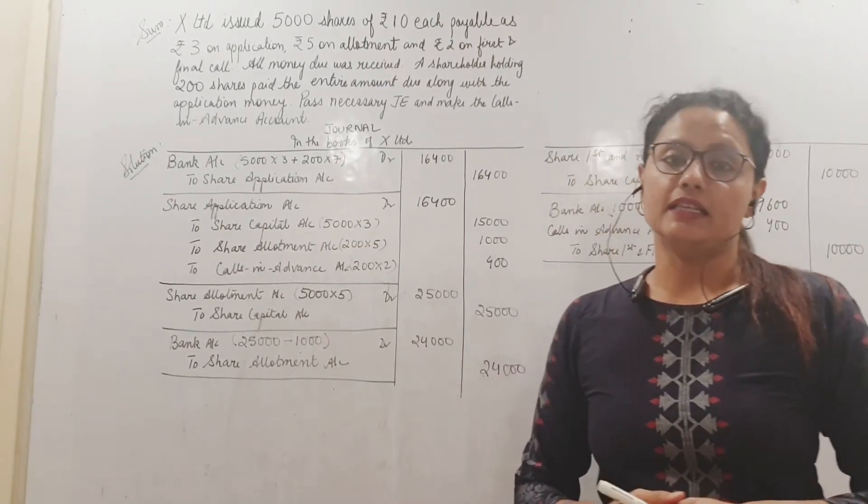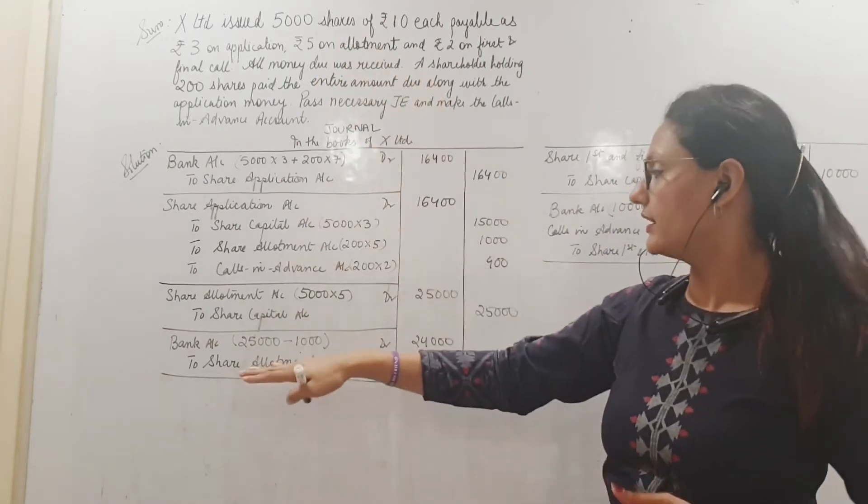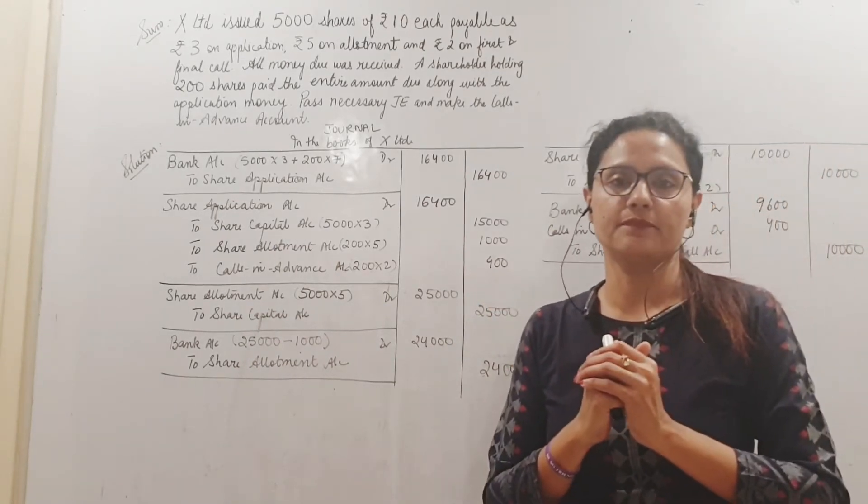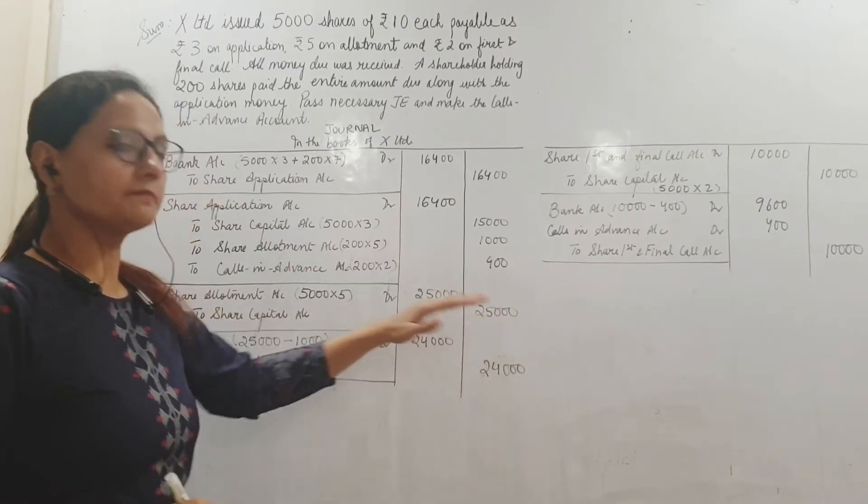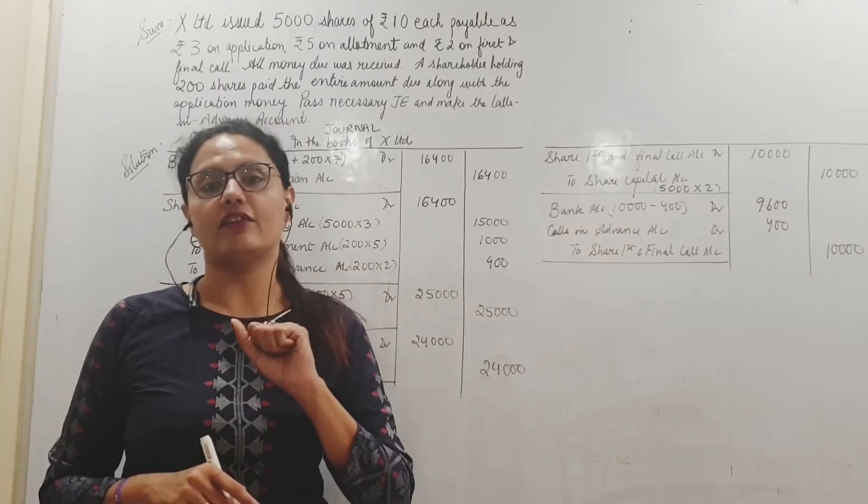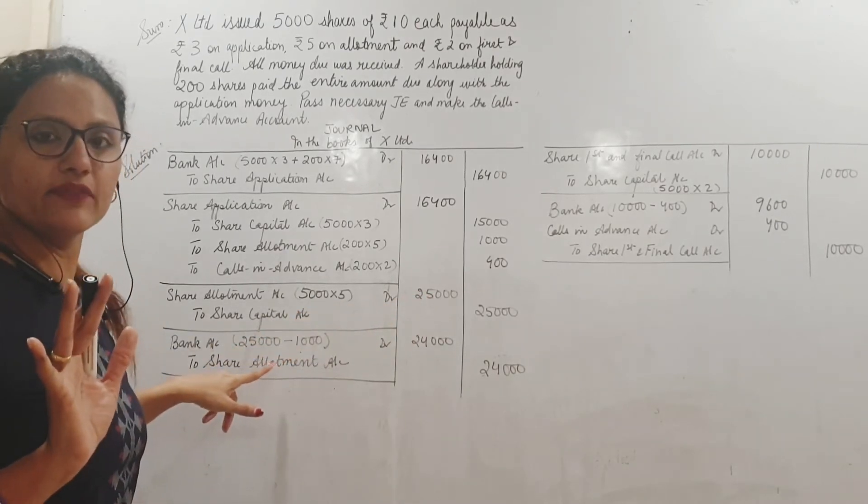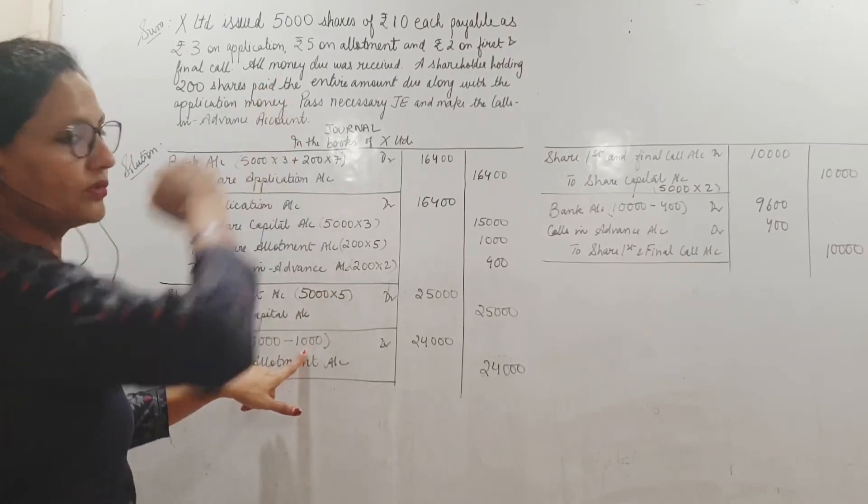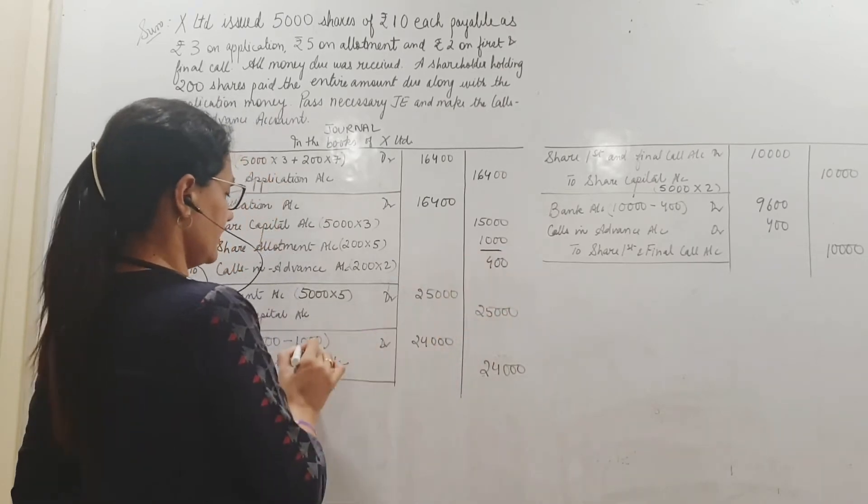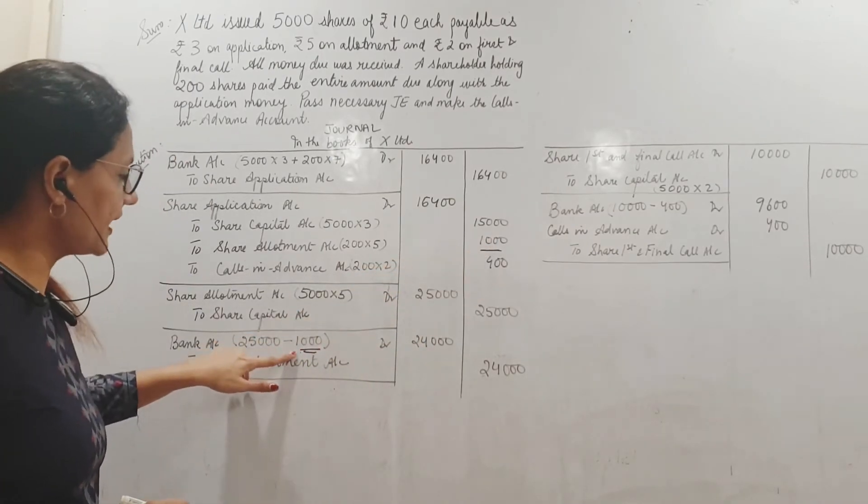Next, the share allotment money is due. When it is due, I totally debit the entire amount to share allotment. 5 rupees per share, 5000 shares. I should be receiving 25,000 rupees. And I have credited that amount now to share capital. But when I received the allotment money, I need to adjust the advance I have received. So here bank account when I debit for allotment money, I will not receive the entire 25,000. I will receive 1000 less because this shareholder has already paid 1000.